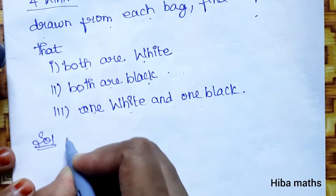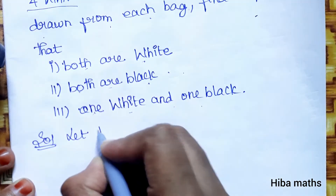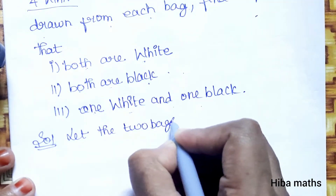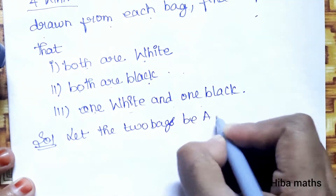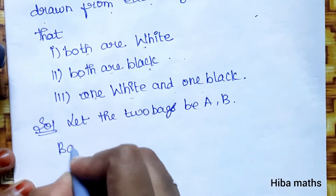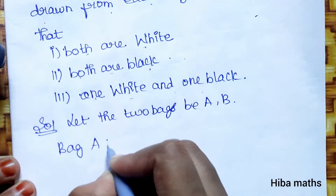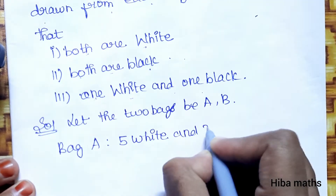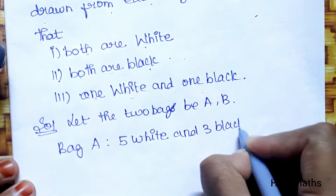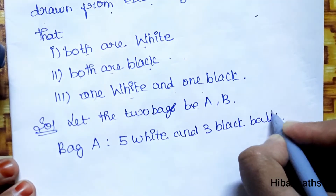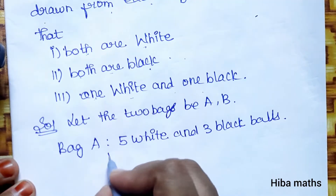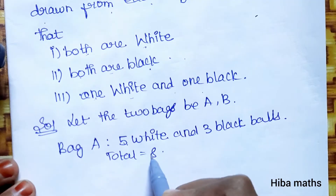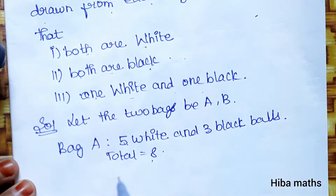Solution: Let the two bags be A and B. Bag A contains 5 white and 3 black balls, so the total is 8. The probability of drawing a white ball from Bag A is 5/8, and the probability of drawing a black ball is 3/8.